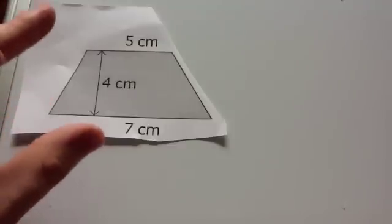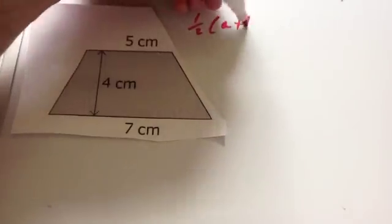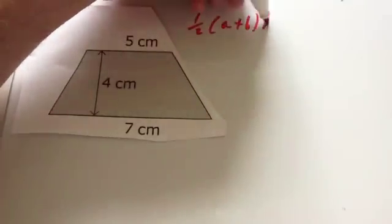Okay, so here's a trapezium, and the question I ask is to work out the area of this trapezium. So remember the formula is a half A plus B, remember A and B are the two parallel sides, times the height.